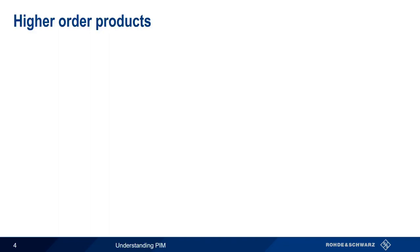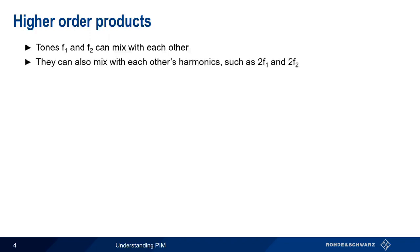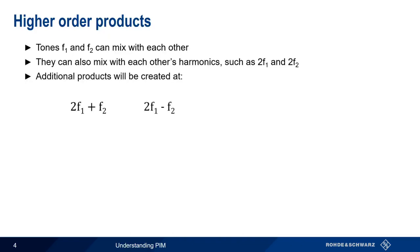Not only will our two fundamental tones, F1 and F2, mix with each other, but they'll also mix with the harmonics, such as 2F1 and 2F2. So we'll have additional intermodulation products at 2F1 plus F2, 2F1 minus F2, 2F2 plus F1, 2F2 minus F1, etc.